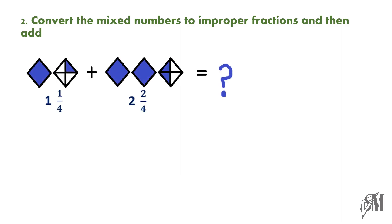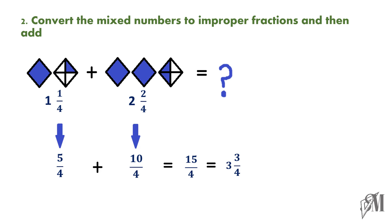This is the same example. 1 and 1 over 4, written as an improper fraction, becomes 5 over 4, and 2 and 2 over 4, written as an improper fraction, becomes 10 over 4. Here the denominators are the same, so you can directly add — it becomes 15 over 4. Now, 15 over 4 is an improper fraction. In fractions, the final answer cannot be an improper fraction; you always have to convert it to a mixed number. So, the final answer is 3 and 3 over 4. You can follow whichever of the two methods is easier for you — the final answer will be the same.